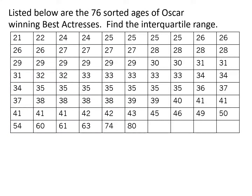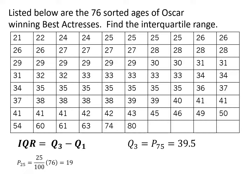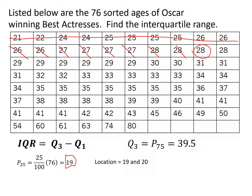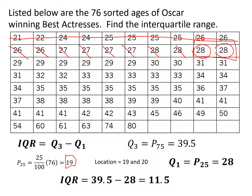For the last problem, we want to find the interquartile range, or IQR, of this data. The IQR is Q3 minus Q1. We found Q3 earlier and got 39.5. We haven't found Q1 yet. Q1, the first quartile, is the 25th percentile: 25 over 100 times 76 gives us exactly 19. Since we get a whole number, we average locations 19 and 20. Both values are 28, so Q1 equals 28. Plugging in Q3 and Q1, we get an IQR of 39.5 minus 28, which equals 11.5.